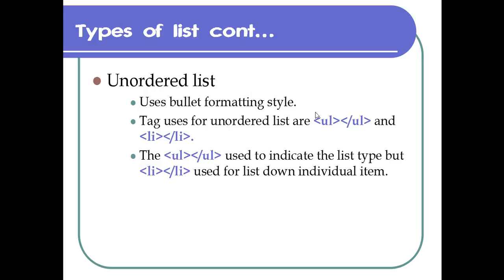If you are going to have a list structure, the OL tag is for ordered list and UL is the unordered list. The OL number is used to indicate the list type. The OL tag stands for ordered list.